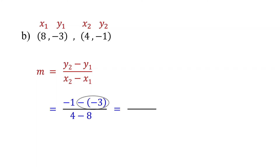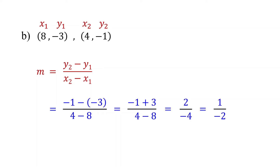Now simplify. Remember, subtracting a negative is the same as adding a positive. Negative 1 plus 3 is 2, and 4 minus 8 is negative 4. If you divide both numbers by 2, it simplifies to 1 over negative 2. Place the negative sign in front — this doesn't change the value of the slope because they are equivalent fractions. So the slope is negative one half.